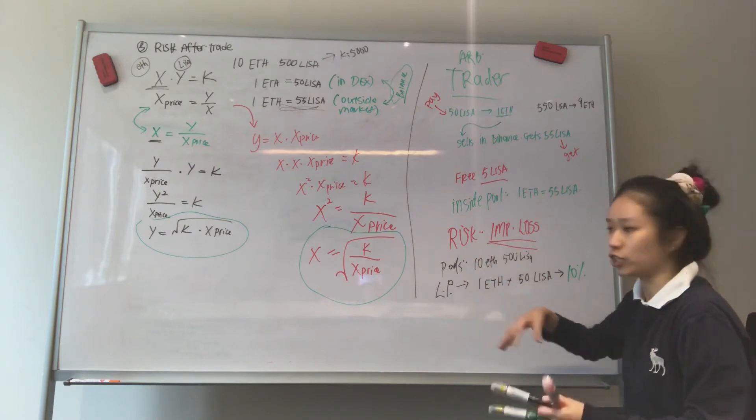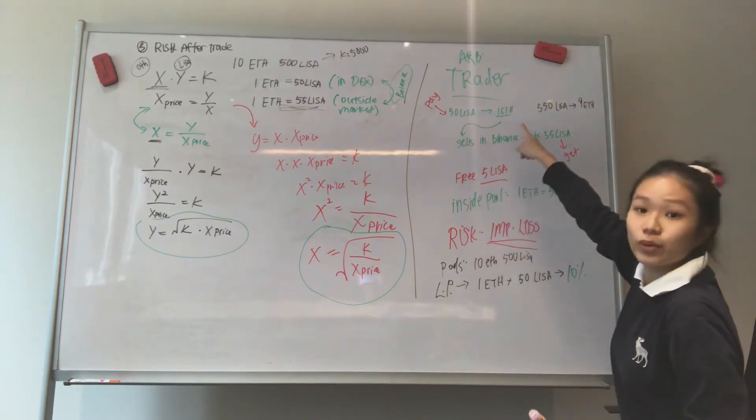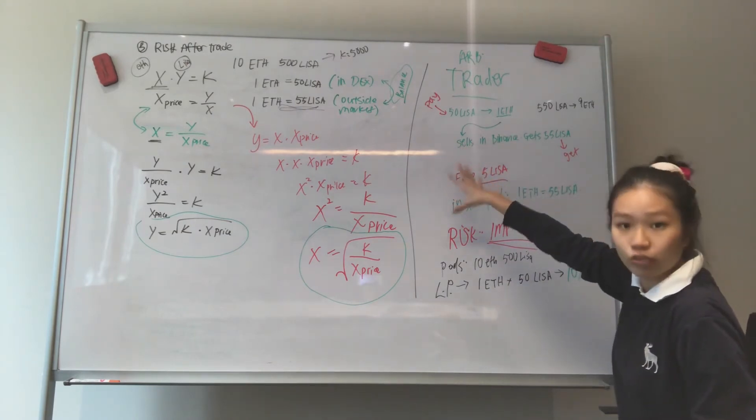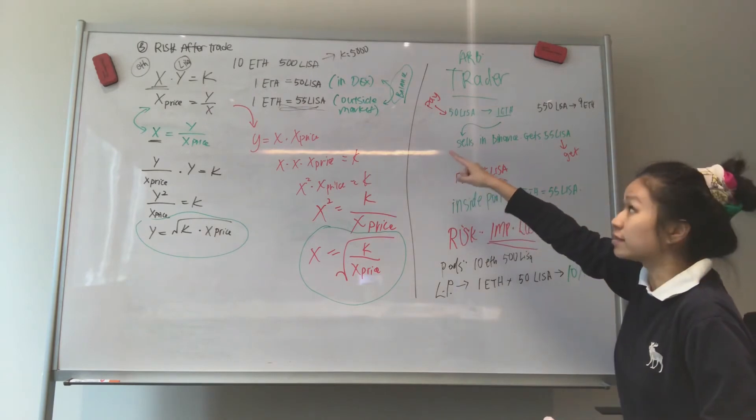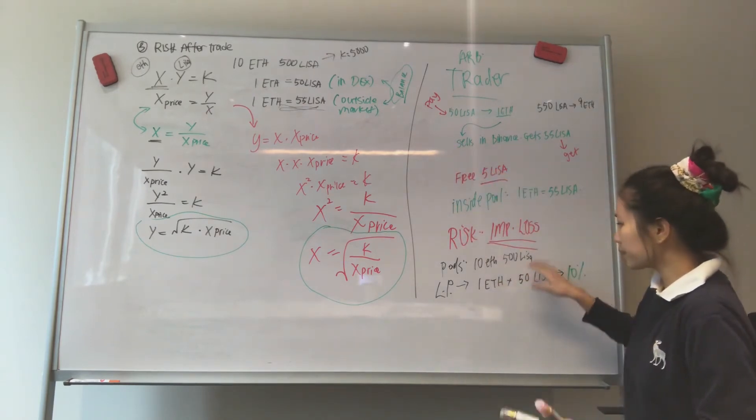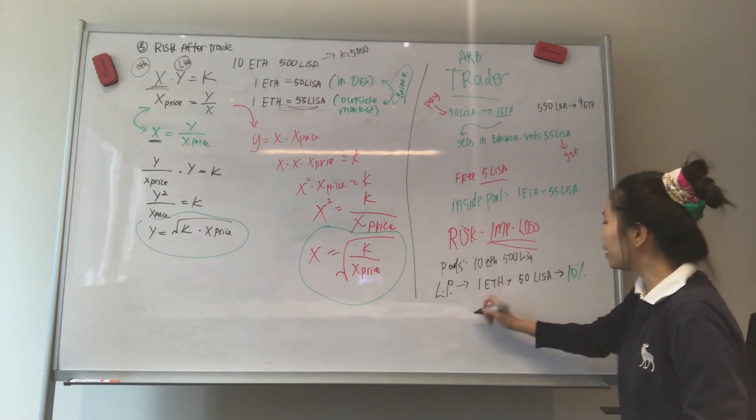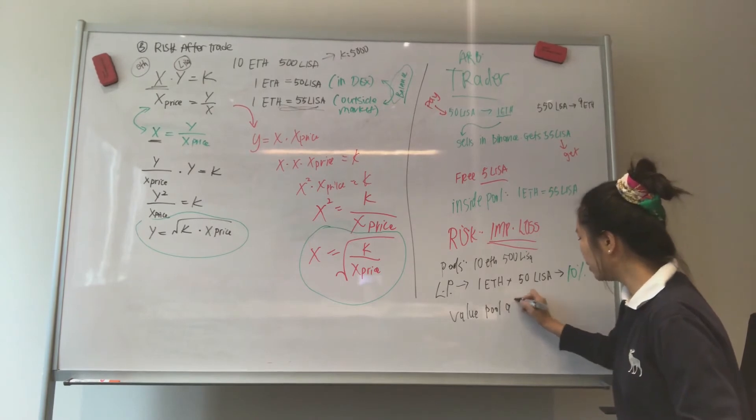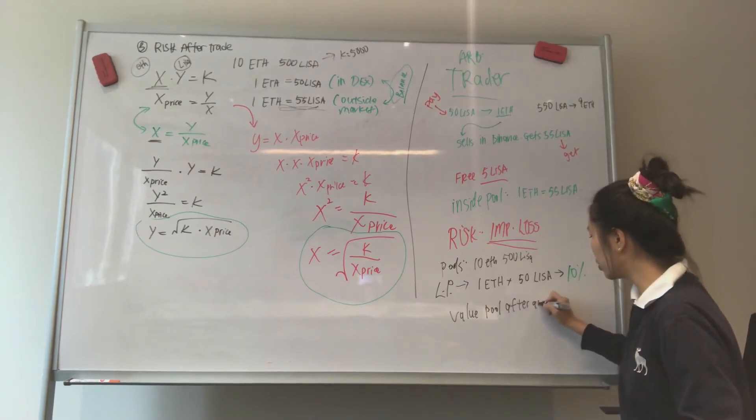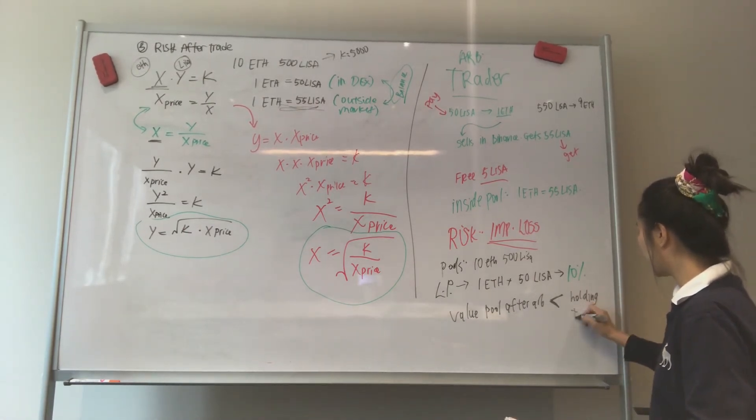So this is the situation. Now, the loss comes because when these arbitrage traders are doing all these different trades, you're changing the different ratios in the system, in the pool. And loss happens because the value of the pool after the arbitrage trade is less than holding tokens.